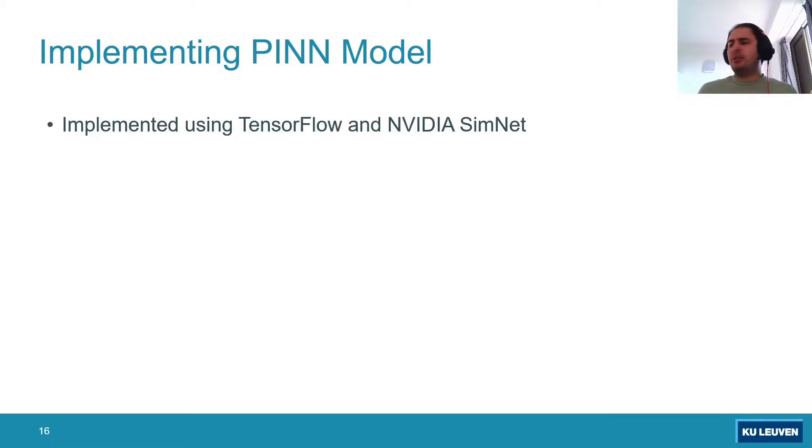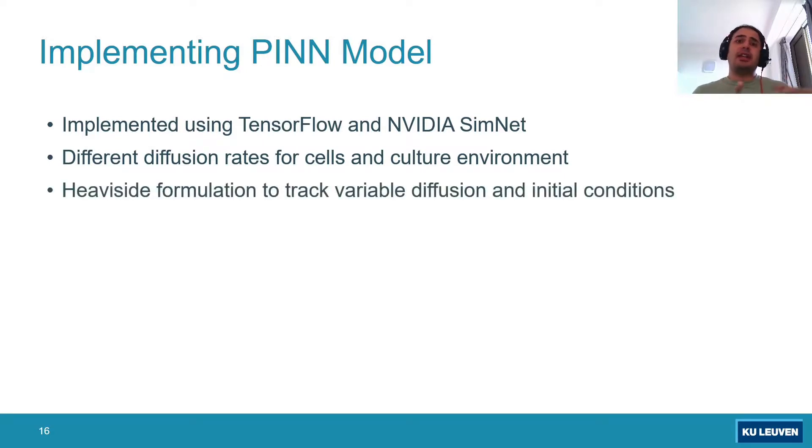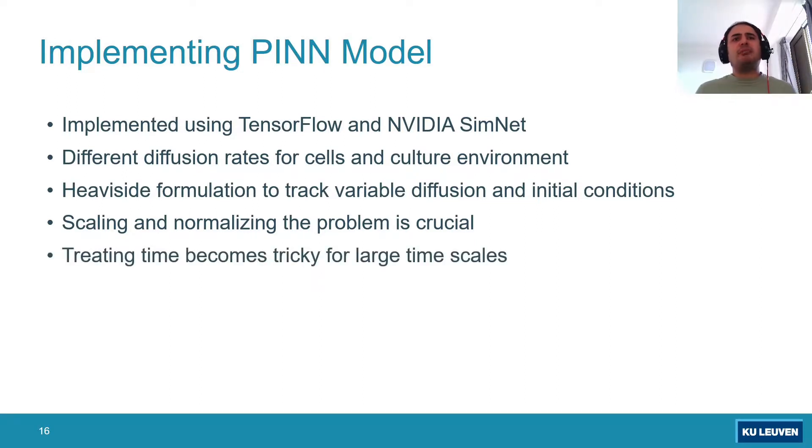To implement the PINN model, we used NVIDIA SimNet, which is a library on top of TensorFlow for implementing these PINN models. We had different reaction diffusion rates for cell and culture conditions, and we used a Heaviside formulation to track this because the cells and the environment have different diffusion rates. Scaling and normalization is very crucial similar to any other machine learning projects. The X, Y, and T should be in range of zero to one. Treating with time becomes tricky for larger scales because we have assumed that time is continuous. This is an active field of research to consider time as being discrete and propose new architectures to deal with that.